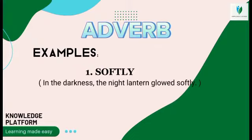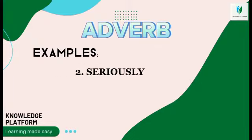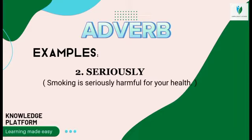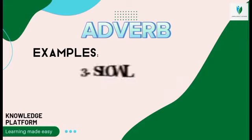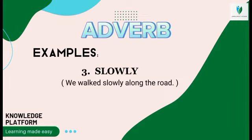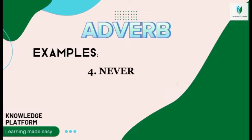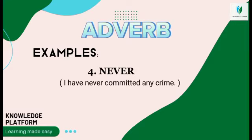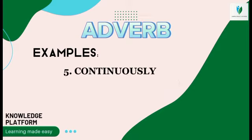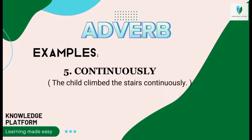Example two — seriously: 'Smoking is seriously harmful for your health.' Example three — slowly: 'We walked slowly along the road.' Example four — never: 'I have never committed any crime.' Example five — continuously: 'The child climbed the stairs continuously.'